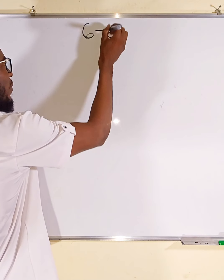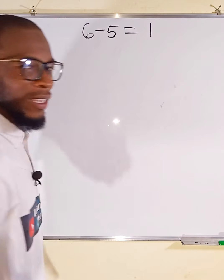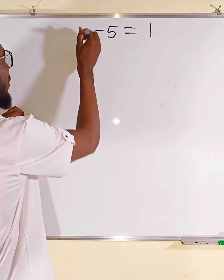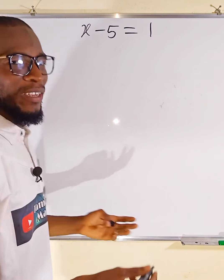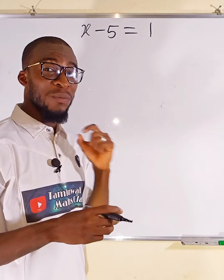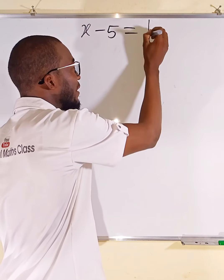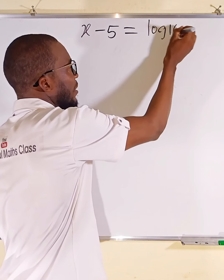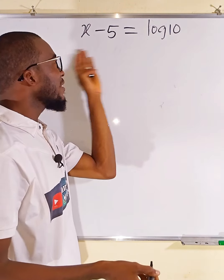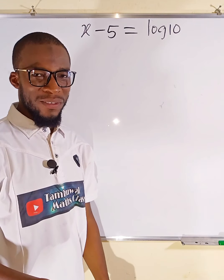If we have 6 minus 5, we all know that this is equal to 1. So a teacher may decide to remove this 6 here and replace it with x. This is just a linear equation. And if he wishes to form a logarithmic equation, he may decide to substitute this 1 with log 10, because log 10 is equal to 1. If you solve this equation, definitely you will get the value of x to be equal to 6.